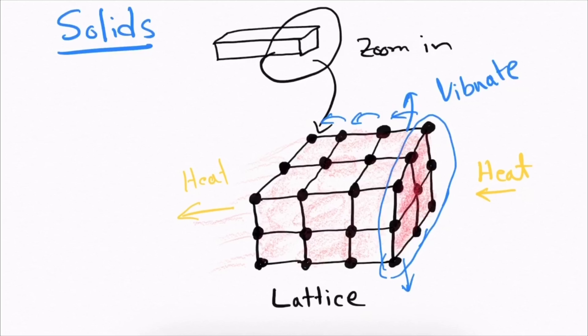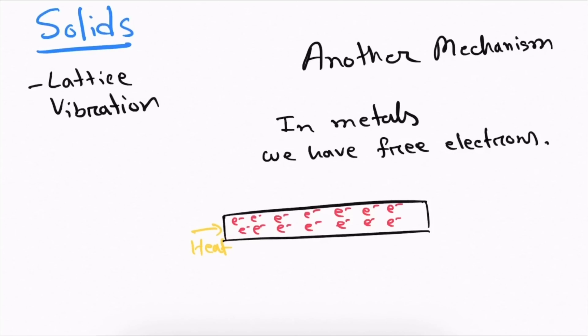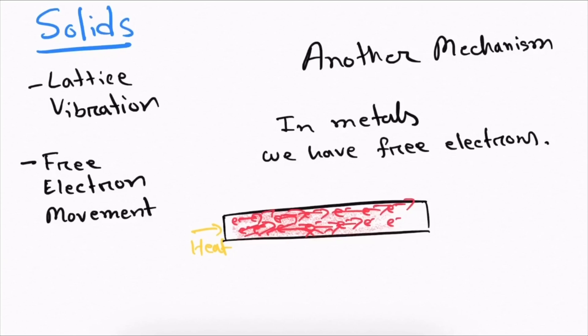Lattice vibration can occur in all types of solids, whether they are metals or not. For metals, we have a different heat conduction mechanism because metals have a lot of free electrons. When you heat a metal, this heat energy increases the movement of all the electrons, and they strike each other and transfer this heat energy throughout the entire metal. This mechanism is called free electron movement and it only applies to metals — not to solids like ceramics or glass.